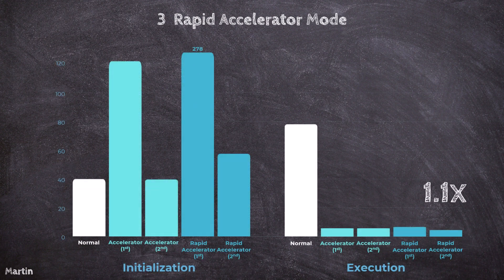This chart summarizes the simulation performance comparison between Normal Mode, Accelerator Mode, and Rapid Accelerator Mode. As shown, the execution time in Rapid Accelerator Mode is 1.1 times faster than in Accelerator Mode for this example. In summary, Accelerator Mode significantly improves simulation performance by reducing execution time.